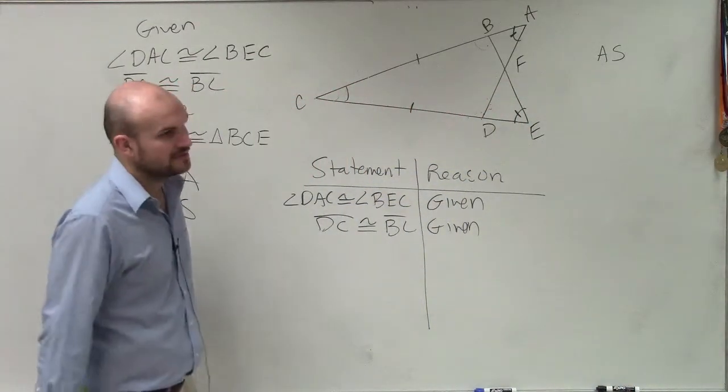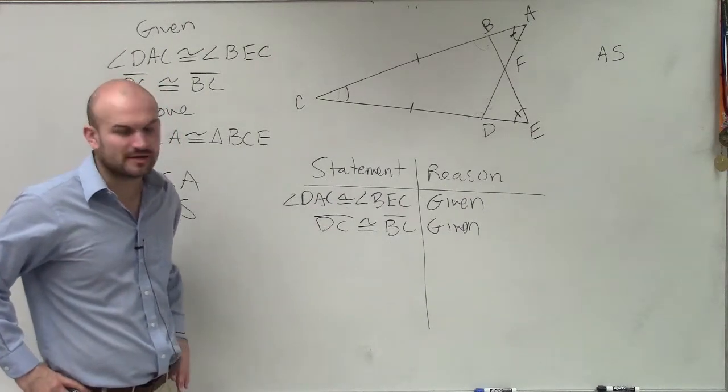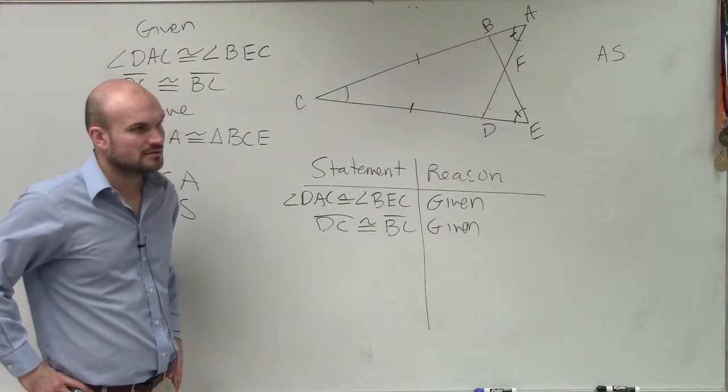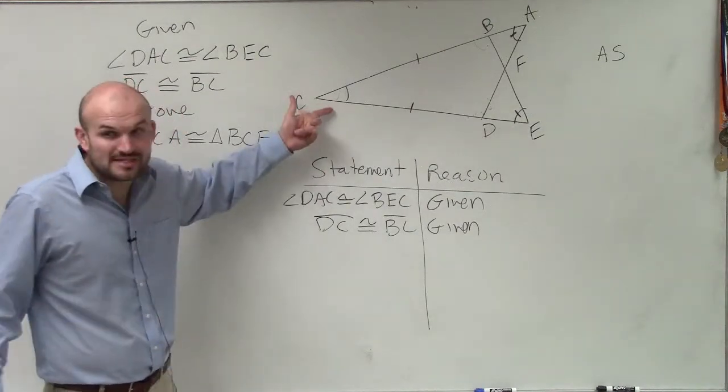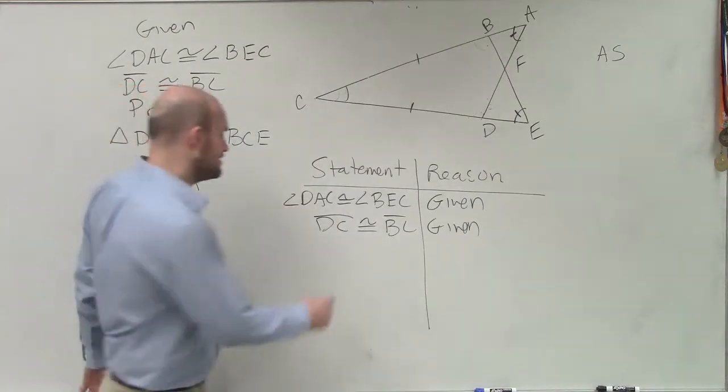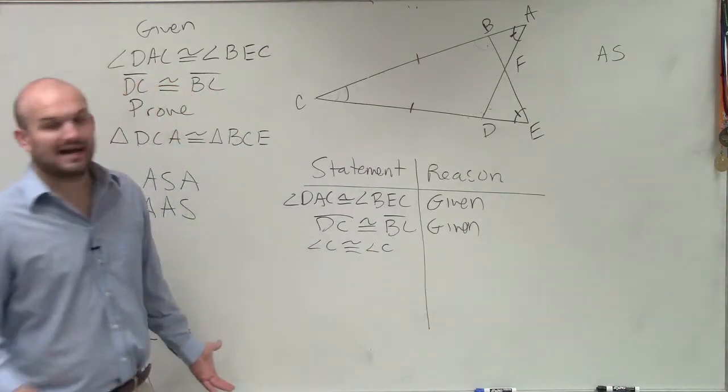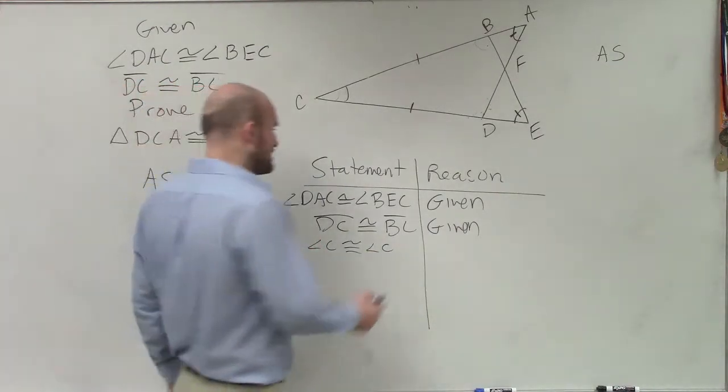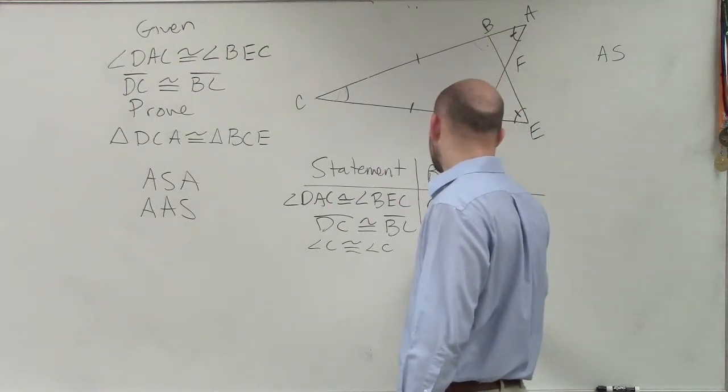And David, do you have any idea? How can we say that angle C is congruent to angle C for both triangles? There's only one C. So does this angle C have to be exactly the same for both triangles? Yes. So you could say angle C is congruent to angle C. Why? Because it's the exact same angle. Or you could say the reflexive property. Reflexive.